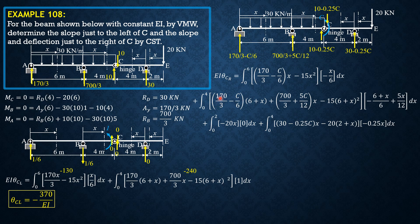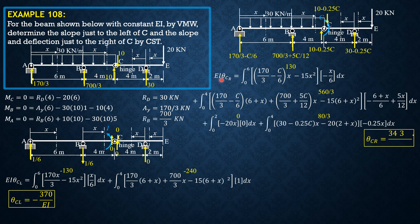Integrating: from 0 to 4, the integral of (170/3·(6+x) plus 700/3·x minus 15·(6+x)²) yields 560/3. From 0 to 6, the integral of (170/3·x minus 15x²)·(negative x/6) gives negative 130. This term is zero. The integral of (30x minus 20·(2+x))·(negative 0.25x) from 0 to 4 gives 80/3. Combining: 130 plus 560/3 plus 80/3, so θ_C-right equals 343.33/EI.